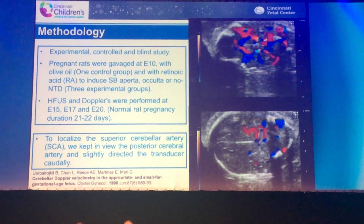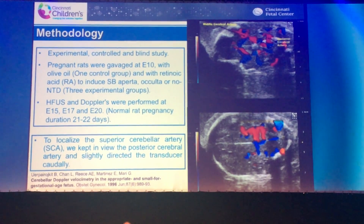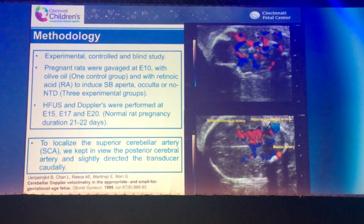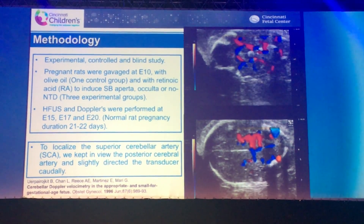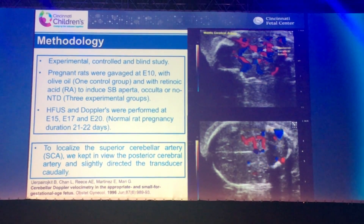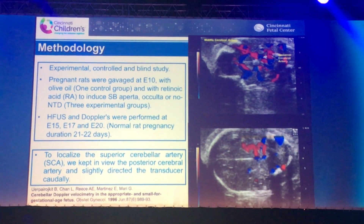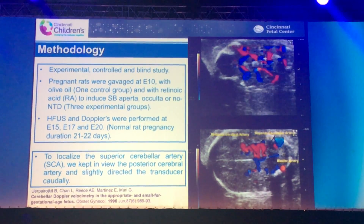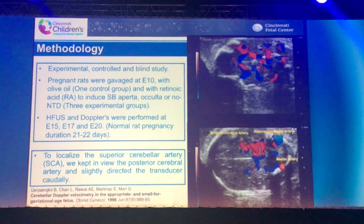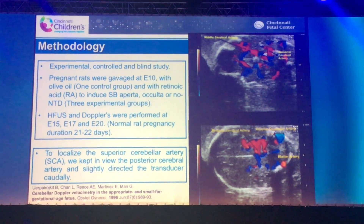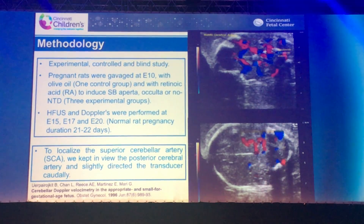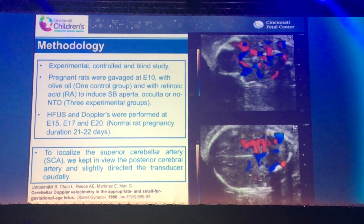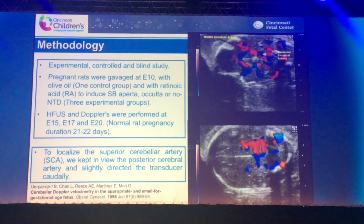This was an experimental, controlled, and blinded study in which a total of 16 pregnant rats were dosed on pregnancy day 10 with olive oil to create a control or sham group, with retinoic acid to induce open spina bifida, to induce spina bifida occulta, and another group of fetuses that did not suffer any neural tube defect — those three groups in total.